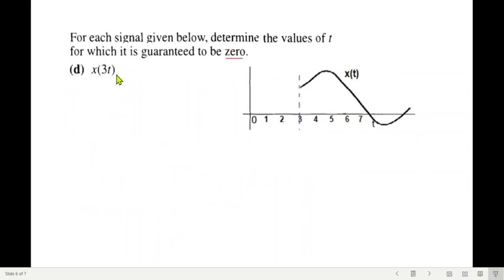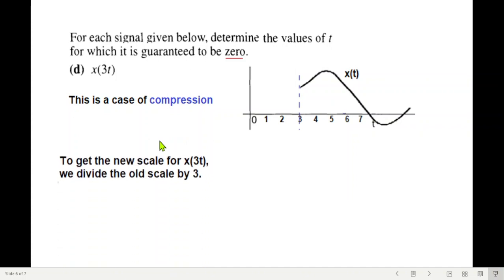Come on to part d. Now this is, if you recall the first video, this is the compression case. Speed up, scale is increased three times. This is a case of compression. To get the new scale for x(3t) we divide the old scale by 3. So in case of a compression, we divide the scale by 3.